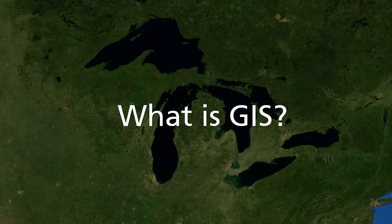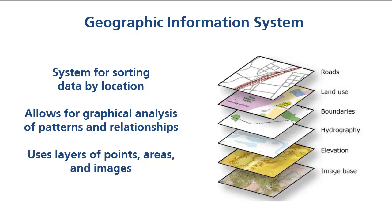What is GIS? A GIS, or Geographic Information System, is a computer-based system for sorting data by location. It allows us to graphically analyze the patterns and relationships in geographic data.